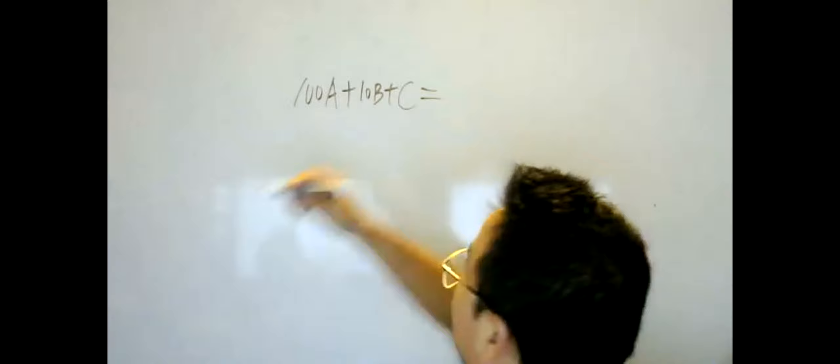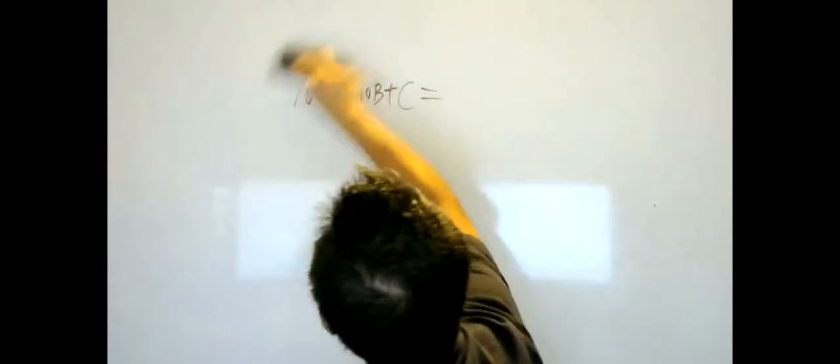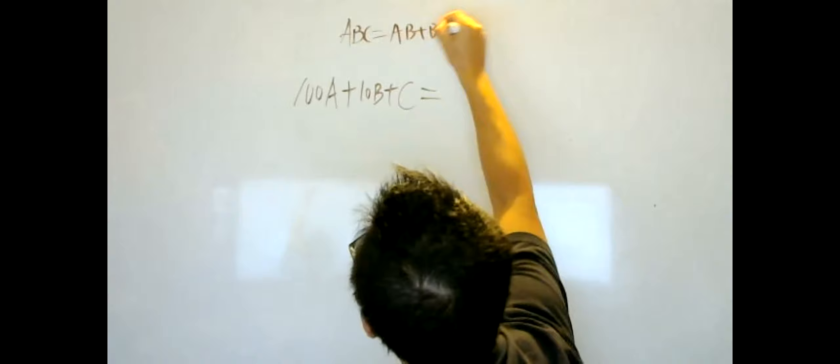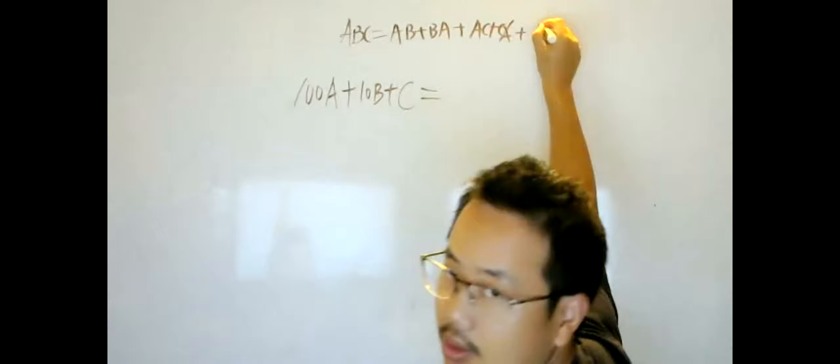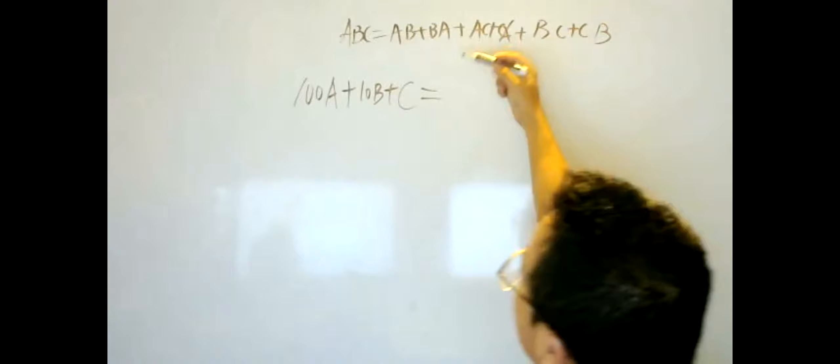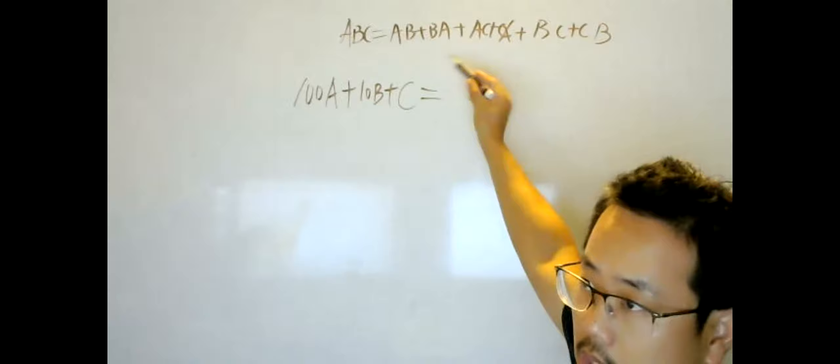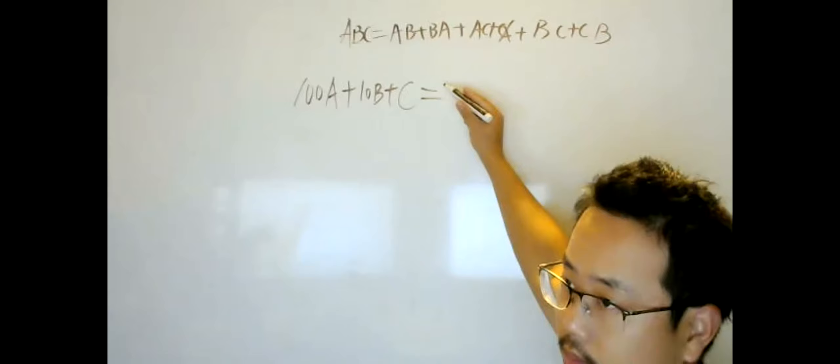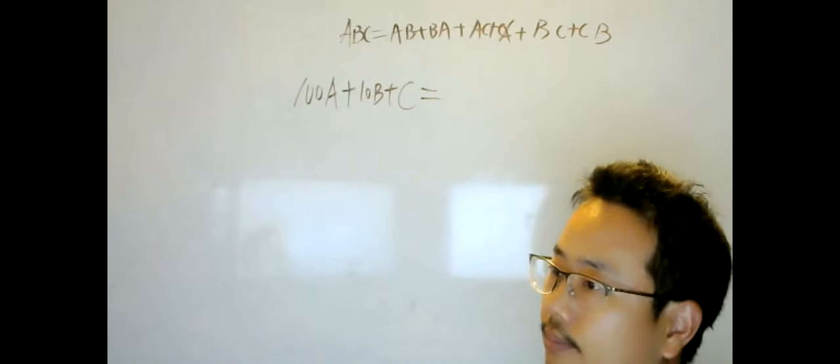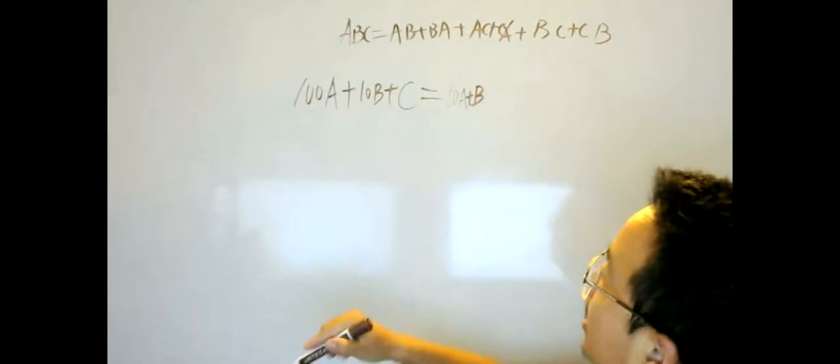So 100A plus 10B plus C. So this is basically the representation of the ABC in the real numerical value. And how do you write AB again? Let's say this original problem. ABC is AB plus, I'm sorry. Oh, I'm trying to push this on. But so AB plus BA plus AC plus CA plus BC plus CB, okay? What's the numerical representation of AB in here? 10A plus B, that's the correct answer. Everybody got that? And we got BA plus, 10B plus A. Plus A, okay.